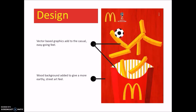Continuing on, we have the original ad, and more specifically we start with the design elements used. This ad is vector-based, which adds to the casual, easy-going feel of McDonald's. The fries and container are given three-dimensional properties by adding shading, which makes it pop out of the ad more readily. Adding the wood background texture gives it a unique earthy feel, common to Russia, and perhaps street art.